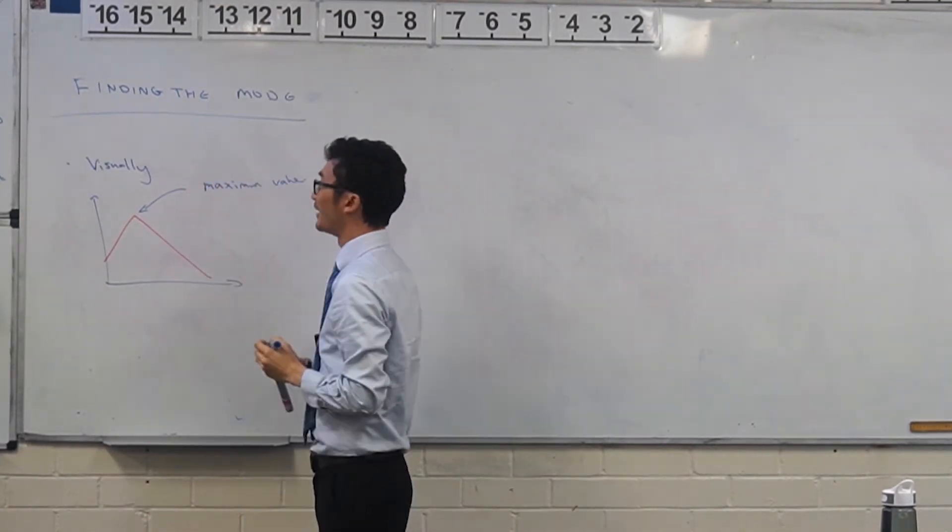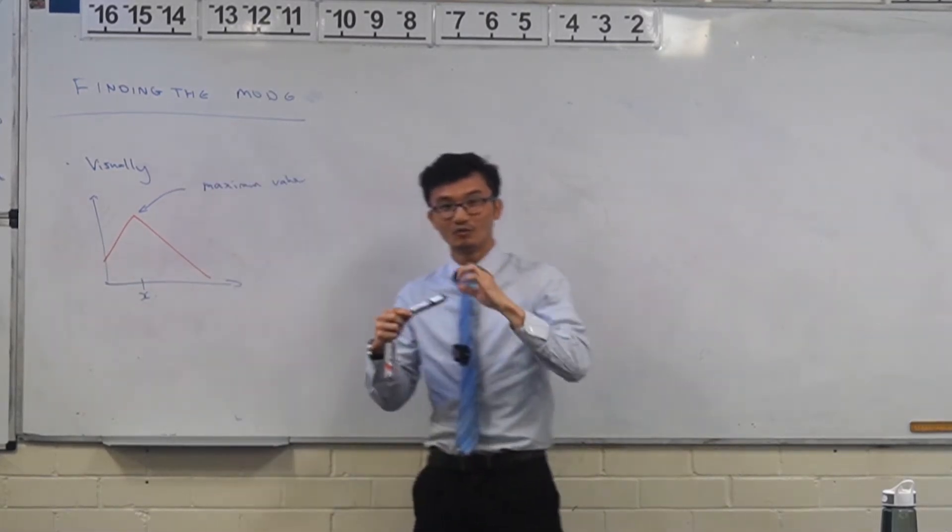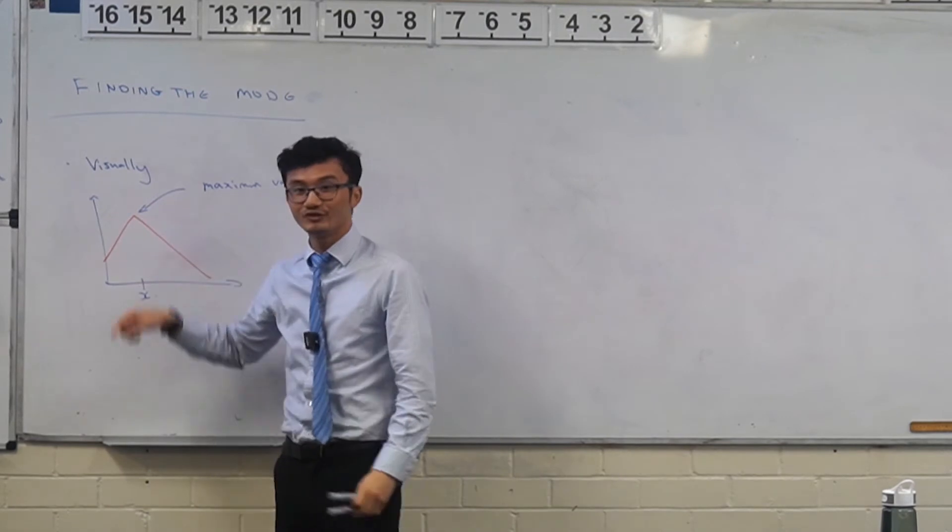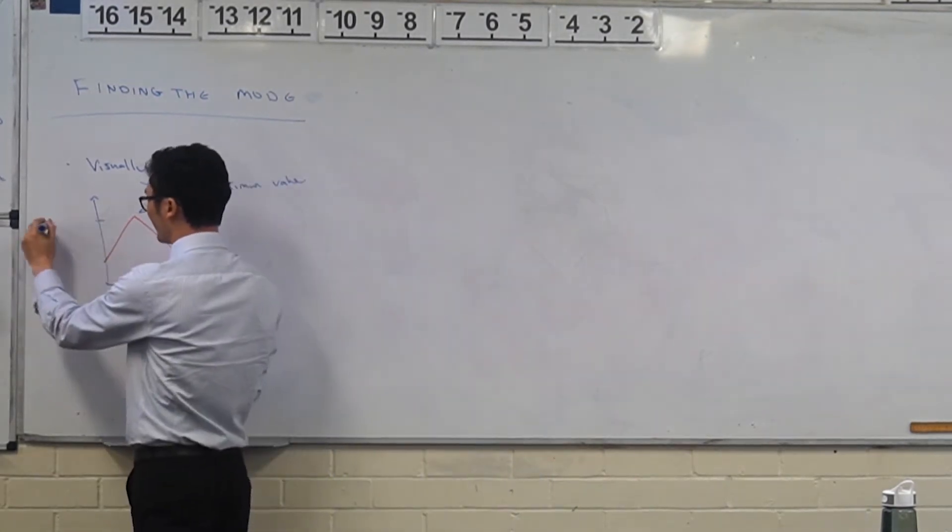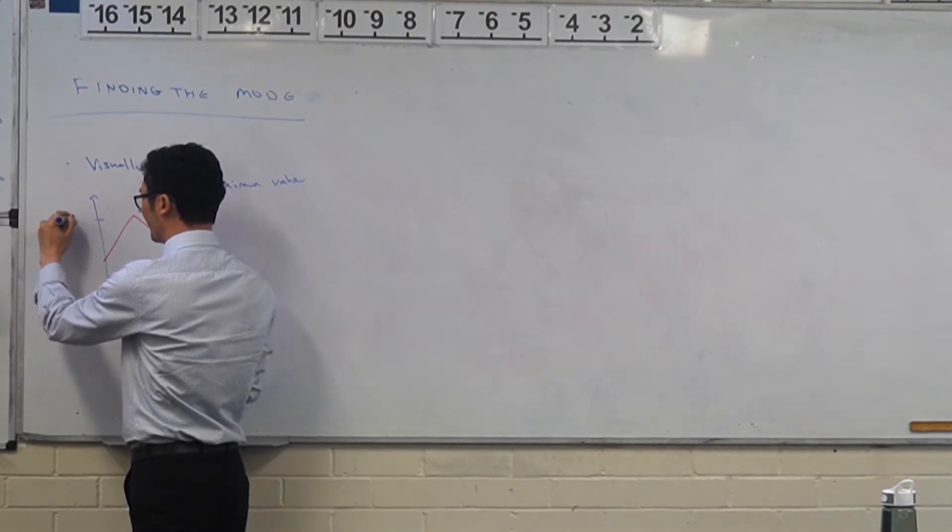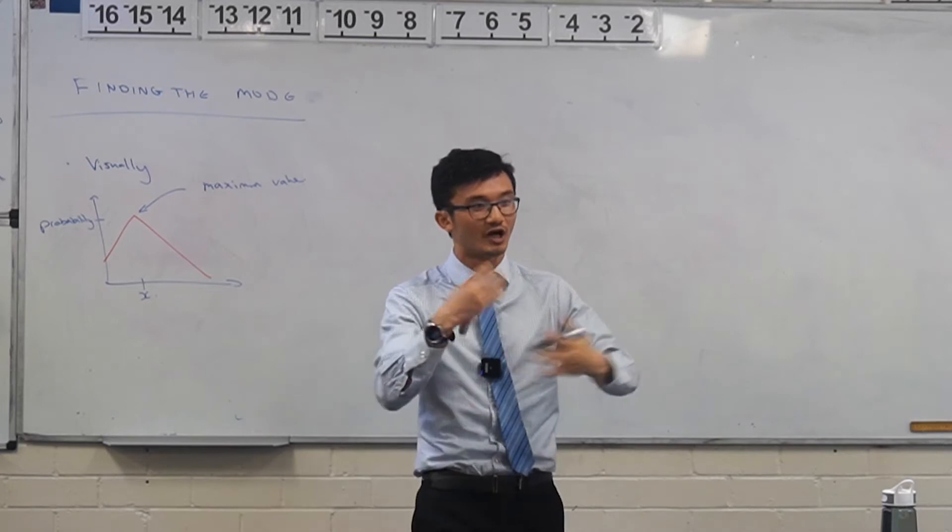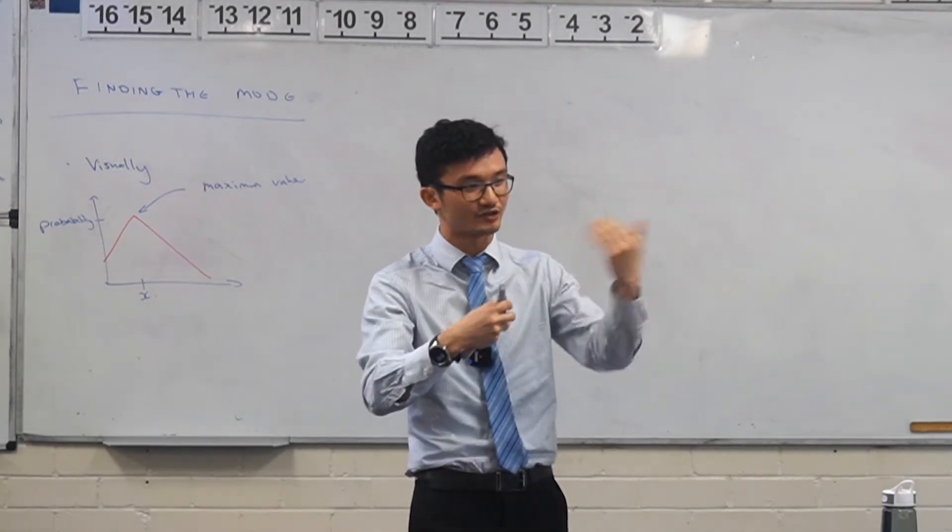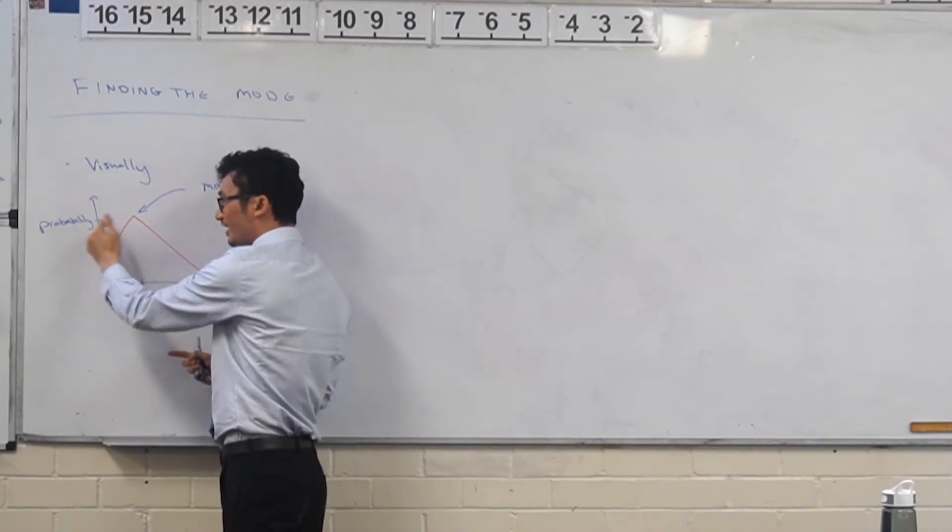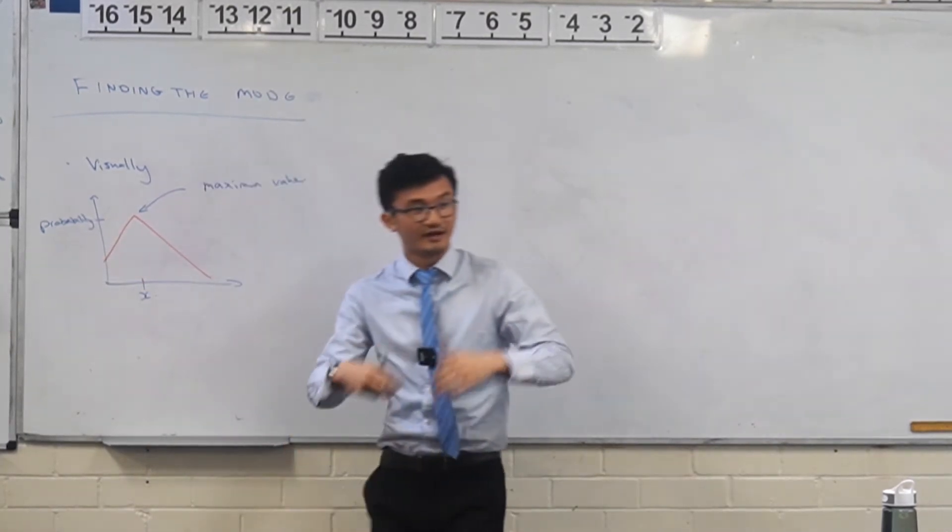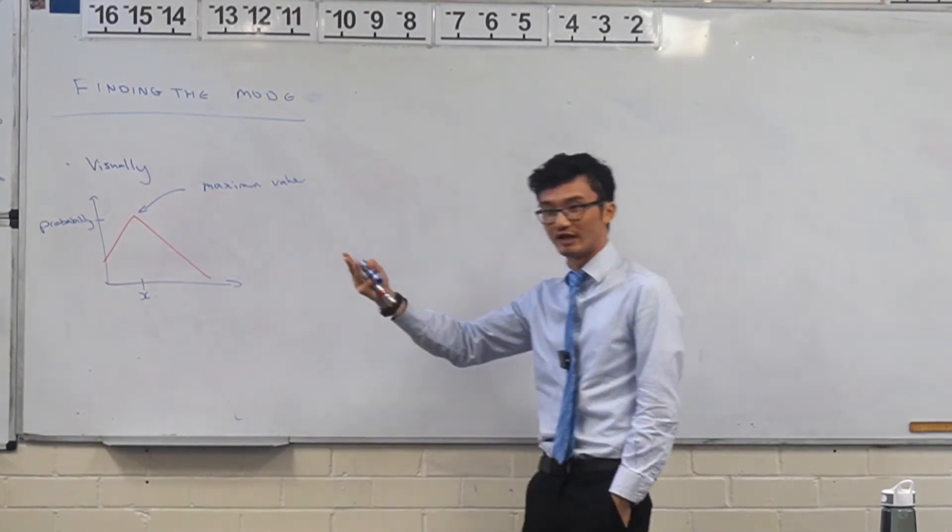At the maximum value, the actual mode is x, right? Because you don't want to look at the probability - this is the probability here. The actual mode is, like with stats, the mode is not how many times it occurs, it's which value is occurring the most times. Same idea here. The mode is not the chance it's happening, it's the value that has the highest chance of occurring. So that's the mode visually, just looking at a graph.